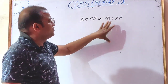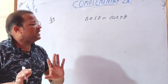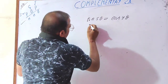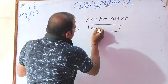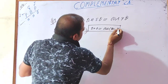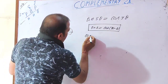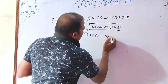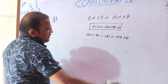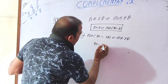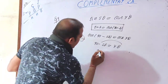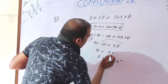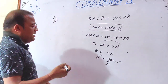Example 4: sine 5theta is equal to cos 4theta. We have to find the value of theta. Change sine using the identity: sine theta equals cos(90 minus theta). So sine 5theta becomes cos(90 minus 5theta). This equals cos 4theta. Since both sides are cos, compare: 90 minus 5theta equals 4theta. So 90 equals 9theta, and theta equals 10. This is the application of complementary angles.